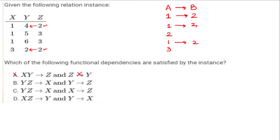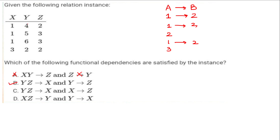That is why option A is cancelled. Now let's check option B: YZ→X. The YZ combinations — (4,2), (5,3), (6,3), (2,2) — are all different, so no problem there. Checking Y alone: the values of Y are all different — 4, 5, 6, 2 — so there is no repetition. Four is related to 2, five related to 3, and all these values are different. So option B looks correct.